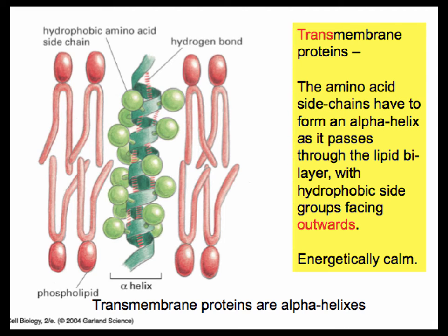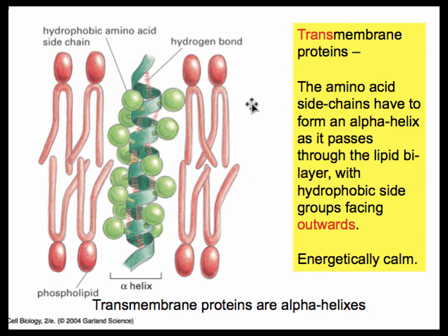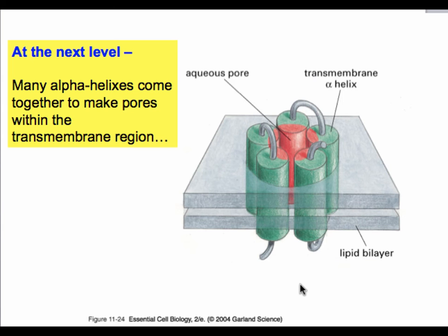One solution is to have only amino acids with hydrophobic side groups facing towards the tails of the phospholipids. The light green molecules represent the side groups of the amino acids, and the dark green ribbon represents the amino acid backbone. In this configuration, the protein can exist thermodynamically quite stably within the phospholipid bilayer. The hydrophilic parts are embedded deep inside the molecule, and the hydrophobic parts face outward toward the hydrophobic environment.